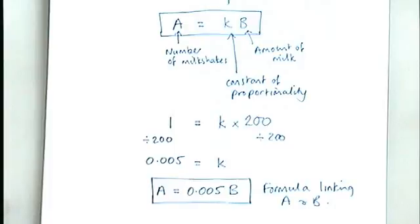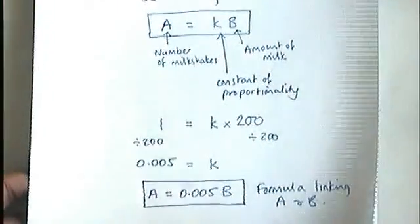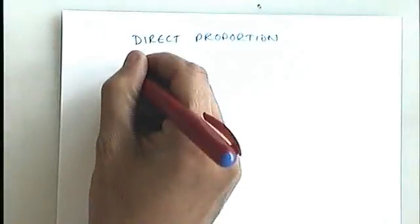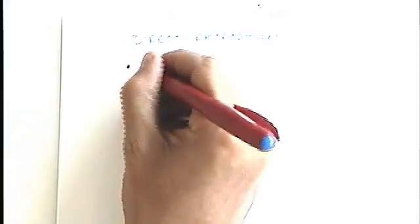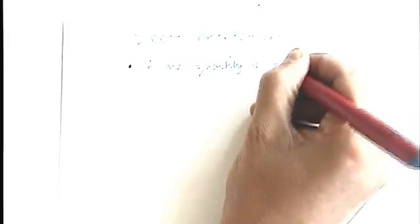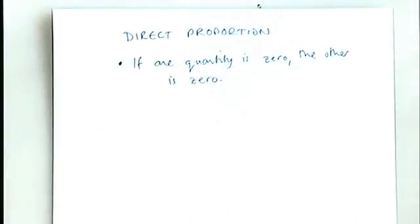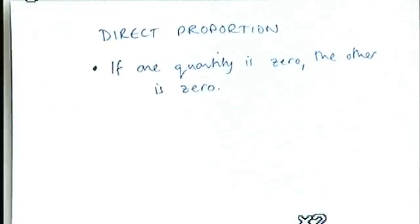So the key points, I guess, for direct proportion are these. If you are told that something is directly proportional, you will be able to know a few things. First of all, if one number or quantity is zero, the other is zero. And in my milkshakes example, that would correspond to, well, if I was making zero milkshakes, then I would need zero milk.